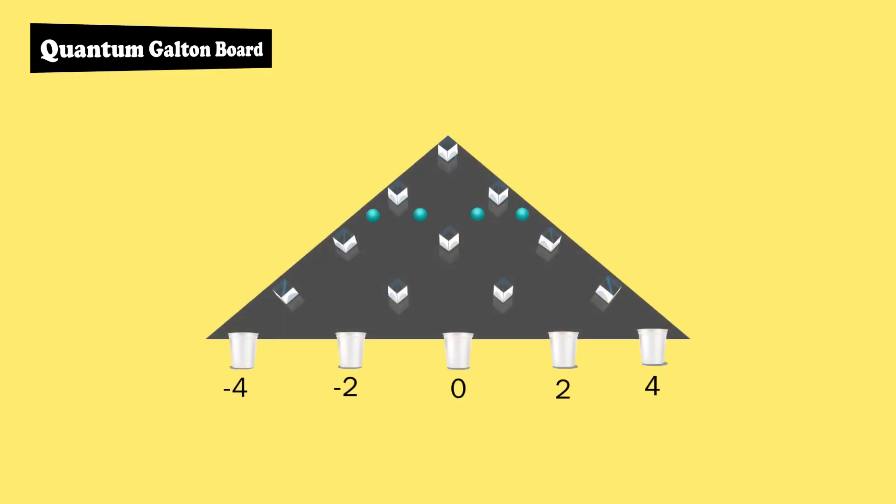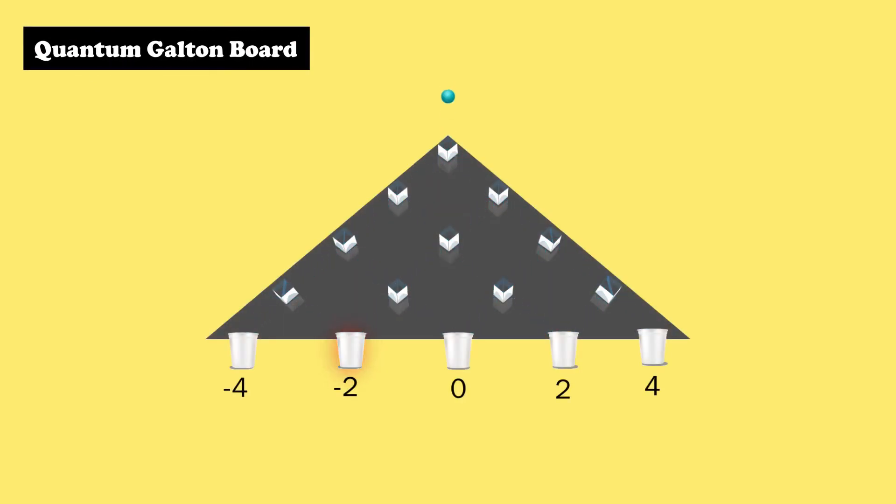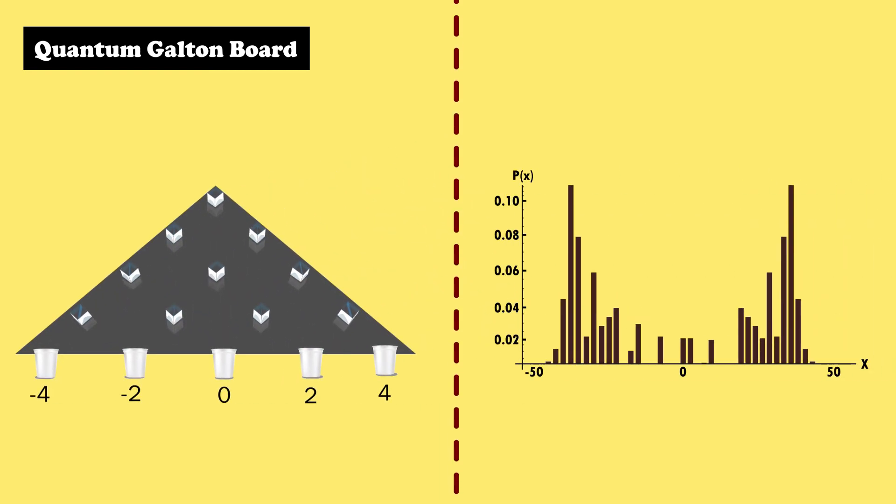In contrast, the pattern generated by a quantum Galton board would be markedly different due to interference effects, resulting in a non-Gaussian distribution.